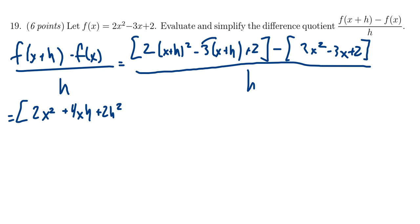Then we have to distribute the negative 3 right here. So it's going to give us negative 3x minus 3h. You have a plus 2 that's in the first group. And then we subtract from it again f of x which is 2x squared minus 3x plus 2. This all sits above h.